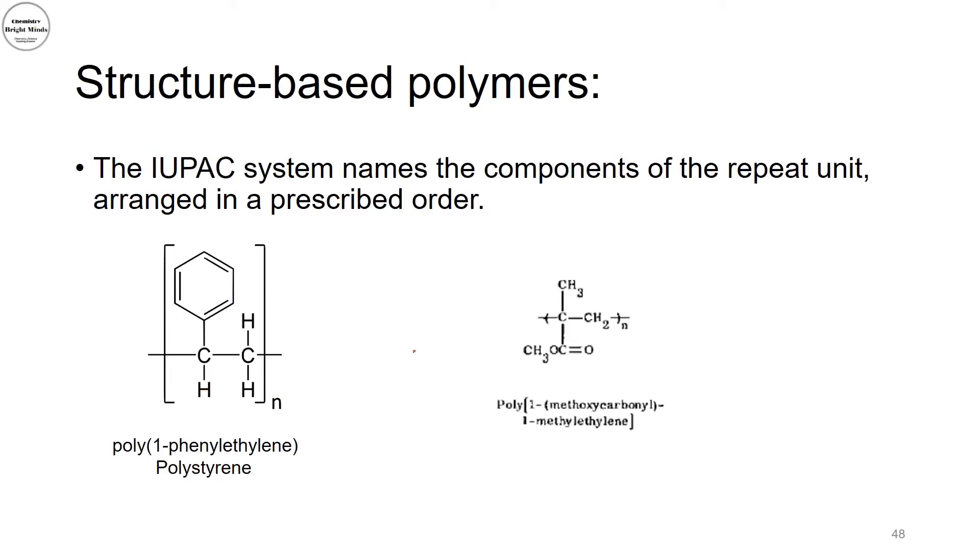For the structure-based polymers, it will be based on the IUPAC naming system, and the IUPAC naming system is actually based on naming the polymers according to their scientific names or systematic scientific name. In that case, polystyrene, the IUPAC name of styrene is 1-phenylethylene. This is why the structure-based polymer naming would be derived from this word by adding poly at the beginning, and now I have poly-1-phenylethylene.